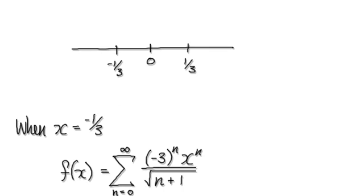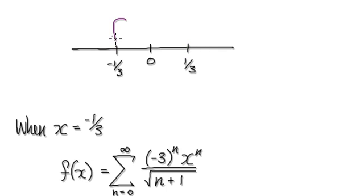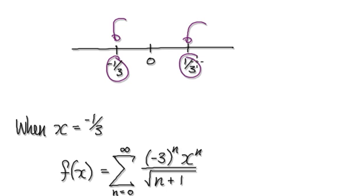Following on from the previous video, we've established that anything in between this interval will converge. We now need to consider what happens when it's dead on negative a third and dead on a third.